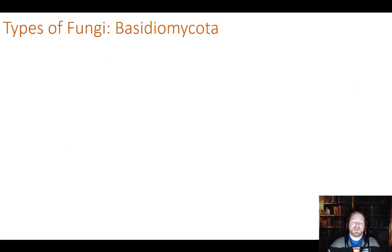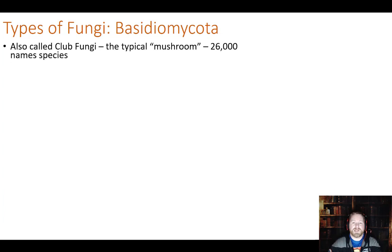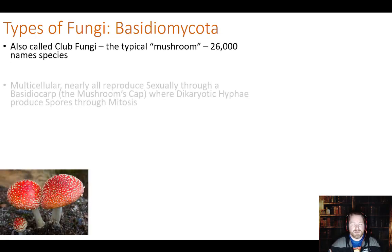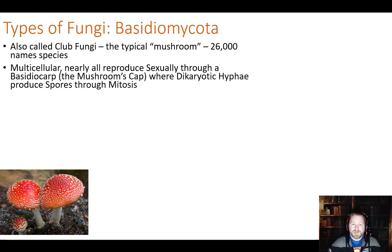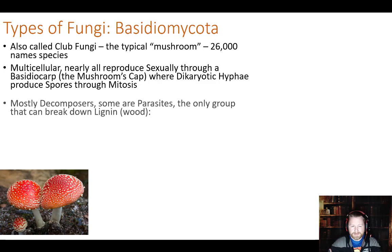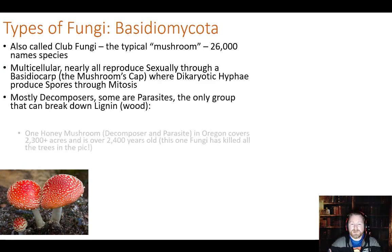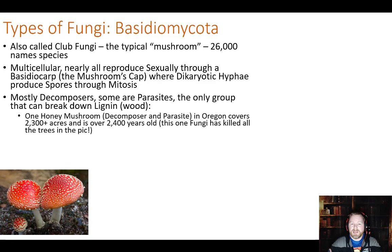Our last type of fungus is called the basidiomycota. This is the one you think of when you think mushroom - your typical mushroom-shaped fungus. Over 26,000 species. All of these are multicellular, and almost all of them reproduce sexually except for very few. Most are going to be decomposers; some are parasitic - not only to animals and plants, but also to other types of fungus as well.